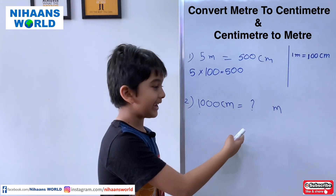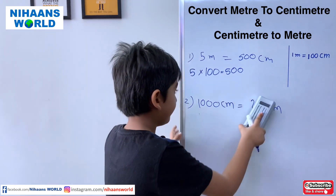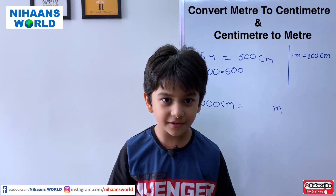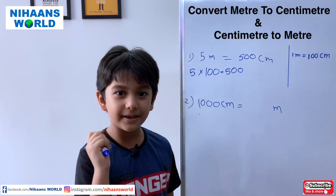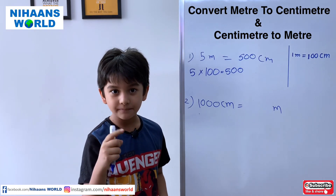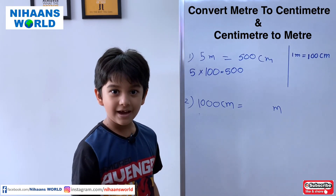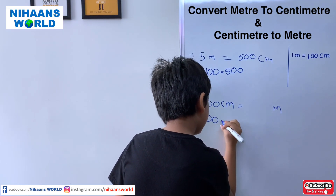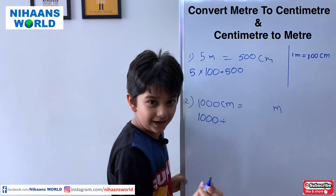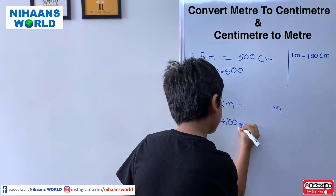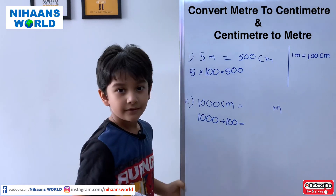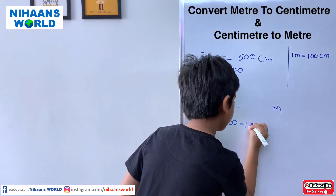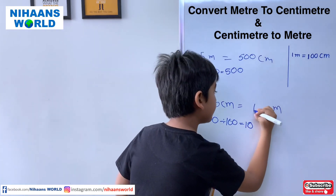Friends, now let us see the second example: 1000 centimeters is equal to how many meters? Friends, can you tell me what is the first step? Yes, we have to divide: 1000 divided by 100 is equal to — can you tell me? 10. So the answer is 10 meters.